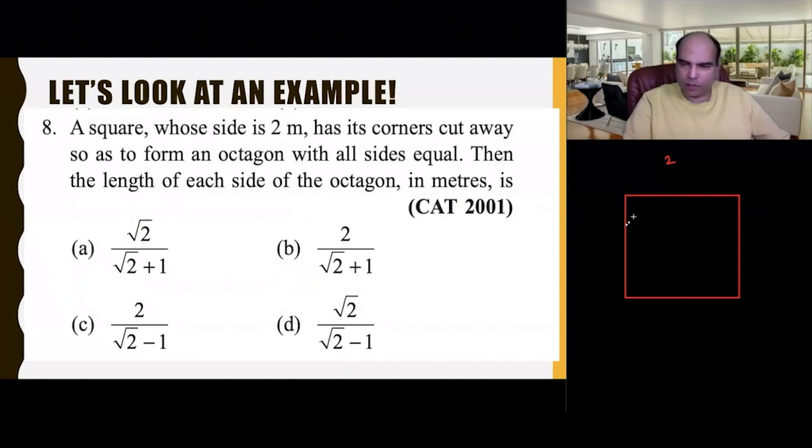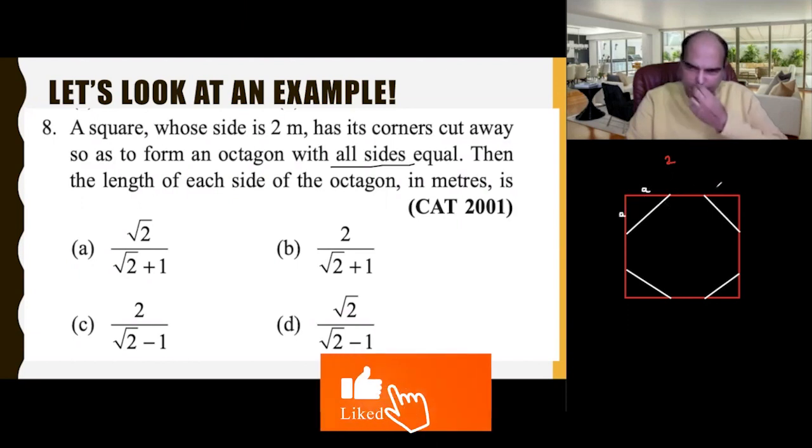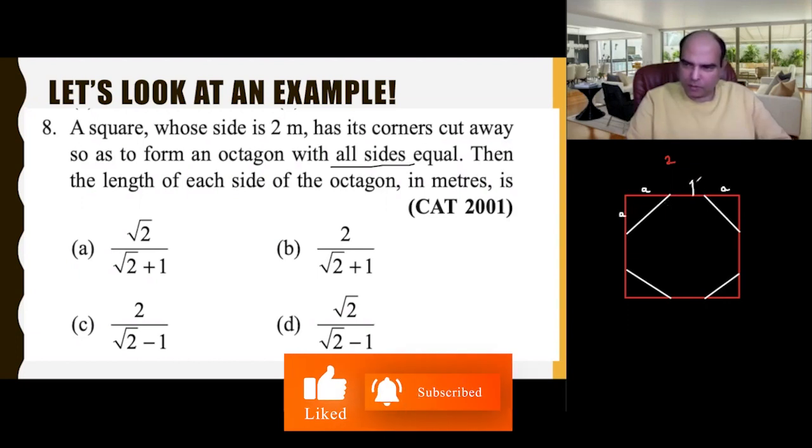All the corners are getting cut away. This corner will get cut away, this corner, this corner, and that corner. These are cut away in such a way so as to form a regular octagon with all sides equal. If I make a cut of 'a' units, then this value is 2 minus 2a.